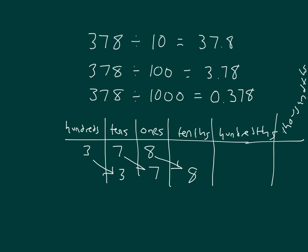So this is how we can go ahead and multiply by 10, 100, or 1000, and how we can divide by 10, 100, or 1000. And how place value charts can help us with this.